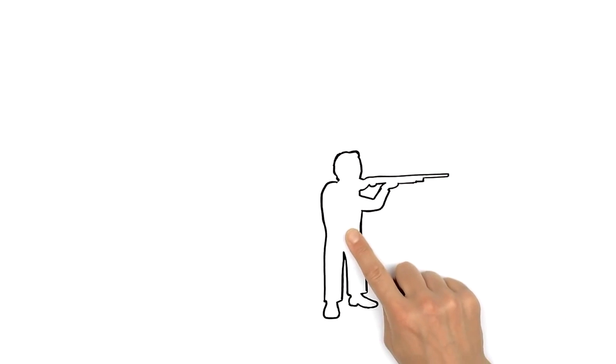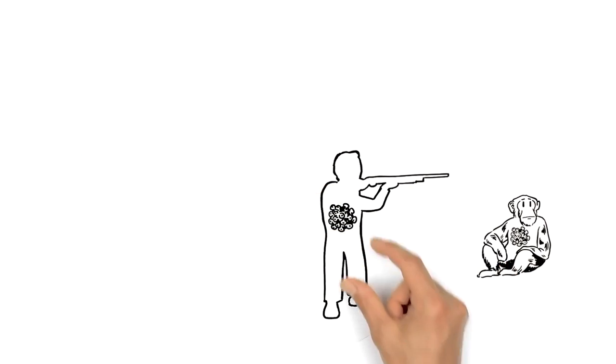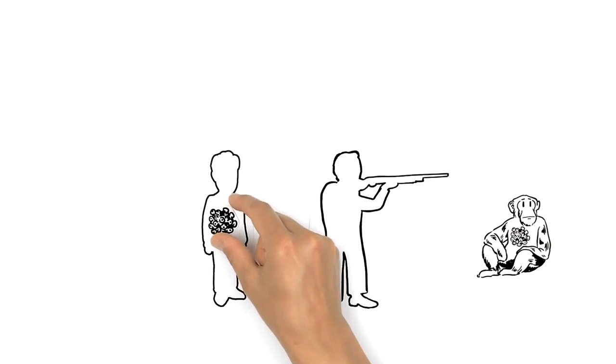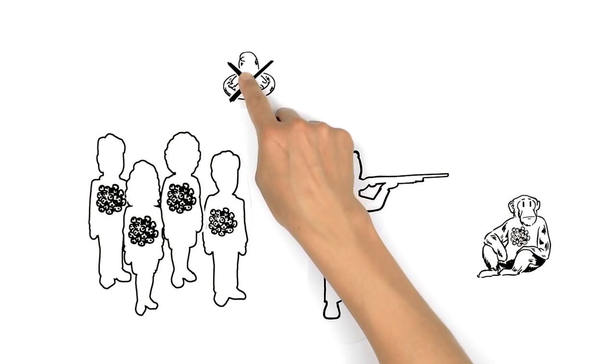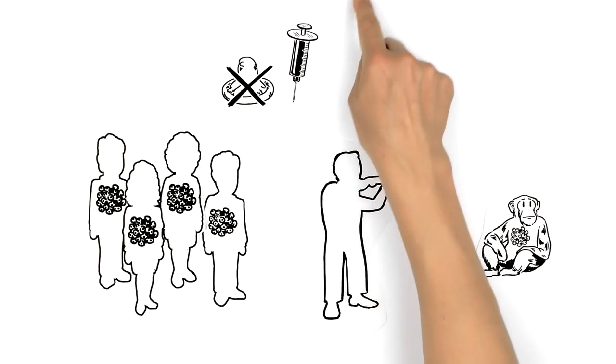Humans first acquired HIV from blood contact with apes and gradually transmitted it to more people through unprotected sex, used syringes, and childbirth.